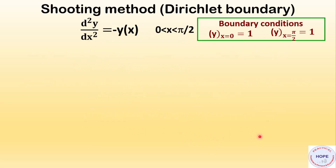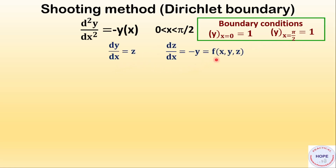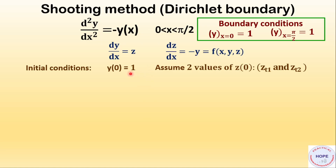Let's take an example. Say this is a second-order differential equation that we want to solve using the shooting method. x lies between 0 and π/2. The boundary conditions are: initial value of y is 1 and final value of y is also 1. Setting dy/dx = z, then dz/dx = -y. The initial value of y is 1 but we don't know the initial value of z, that is the initial slope. So we assume two values of z0: zt1 and zt2.